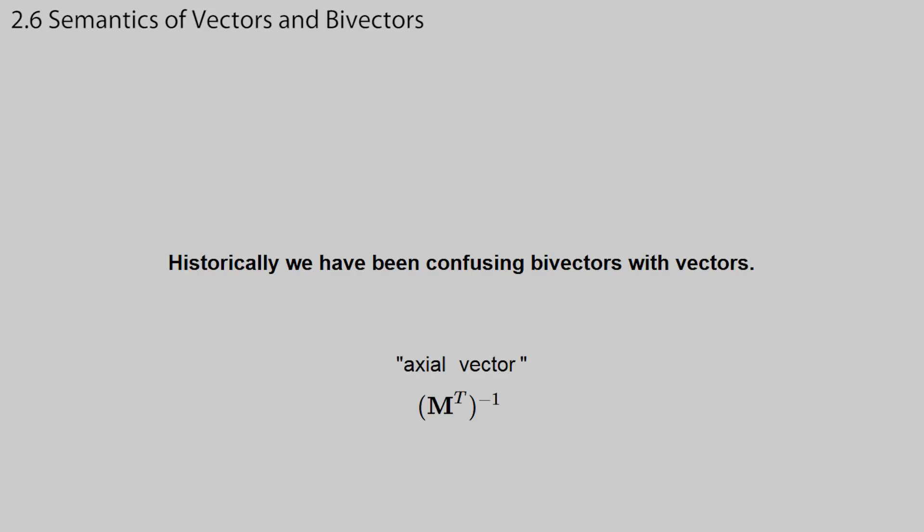Here's an example. You might have seen how normal vectors transform differently than regular vectors, using the inverse transpose of the matrix, instead of the matrix itself. That's because they are not really vectors, but actually bivectors, which we have typecast to vectors. In physics, there's a hack called an axial vector, which has been introduced to differentiate vectors that come from cross product from regular vectors. Bivector is the actual type of the object, and it should be thought of and manipulated as such.